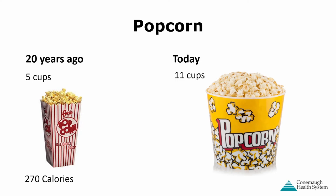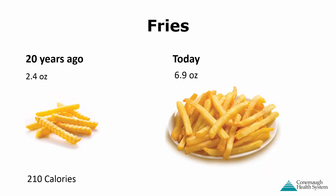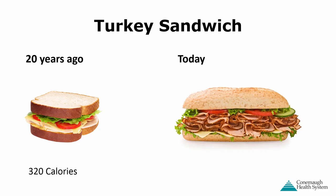Popcorn: 20 years ago, five cups was about 270 calories; today the endless tub at the movies is about 11 cups — over 600 calories, and you can go back for a refill. French fries: 20 years ago, about 200 calories; today over 600 calories. A turkey sandwich: 20 years ago on two slices of bread was about 300 calories; today a six-inch sub packs about 800 calories — and most places offer a foot-long.